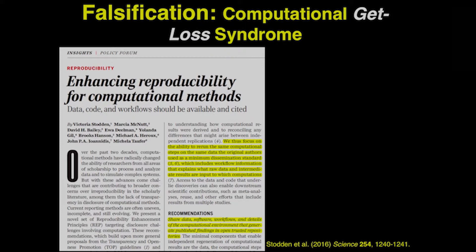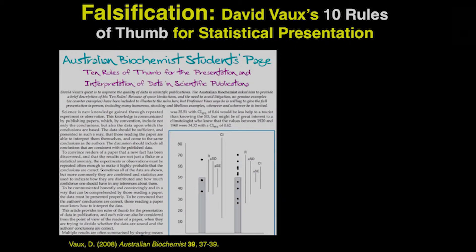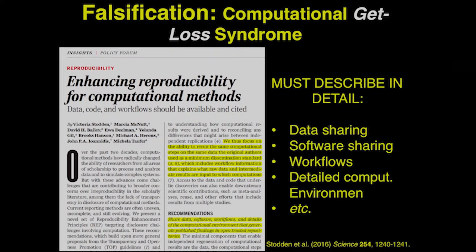...a policy forum paper called 'Enhancing Reproducibility for Computational Methods' was published. In this two-page policy paper, it clearly states that all future computational papers must describe in detail: how data can be shared so others can use and verify them; software must be shared and must actually be able to run; workflow must be documented step by step; the criteria used to eliminate outliers must be clearly defined; and the detailed computational environment — what kind of system was used — must all be described. Those doing computational biology must document all of this in future papers.